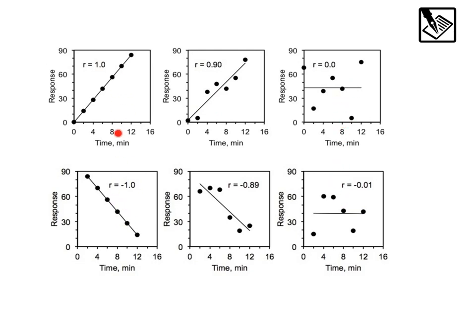So again, closer to 1, the closer to perfect. Closer to zero, the weaker the relationship is. Alright, I hope this video was helpful.